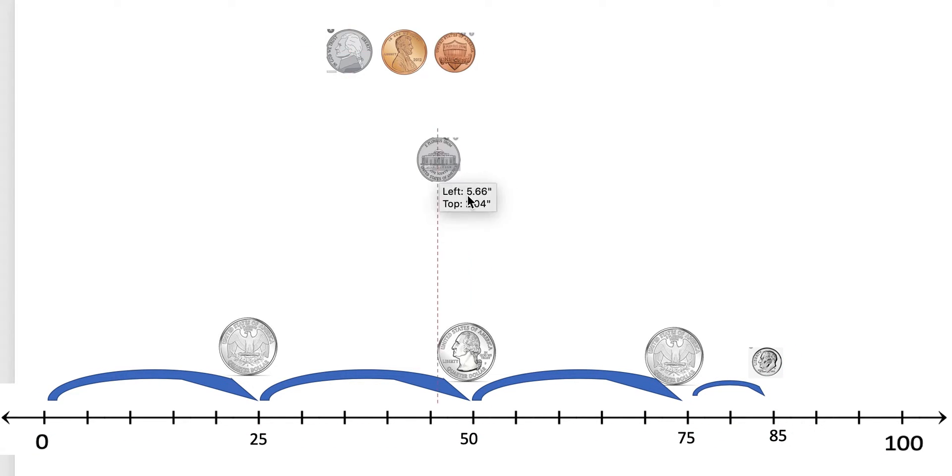Now I have my two nickels left. I'm going to do one at a time here, guys. Let's hop five because a nickel is worth five. And we are going to write 90 because I know 85 plus five is 90. I have one more nickel left. Let's drag him on down. We're going to hop another five because 90 plus five is 95.